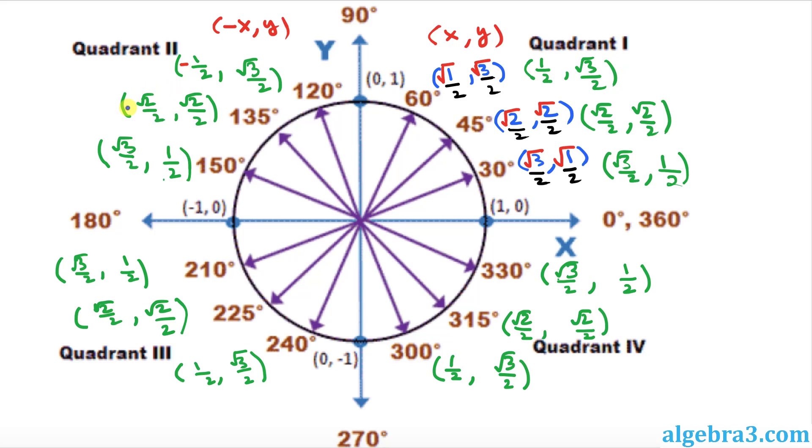So this is going to become negative, this is going to become negative, and this is going to become negative. Now in the third quadrant, both x and y are negative, so this is going to be negative, this is going to be negative as well, this is going to be negative, this is going to be negative, this is going to be negative, and this is going to be negative.